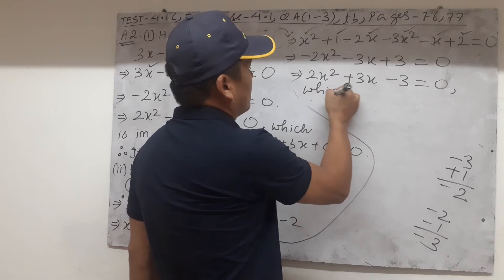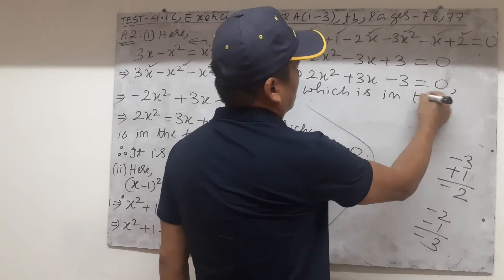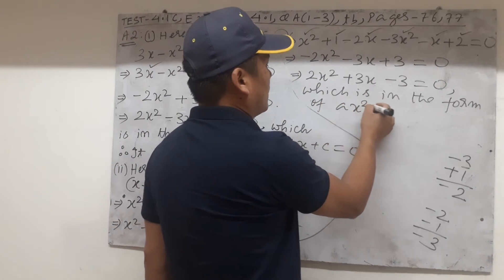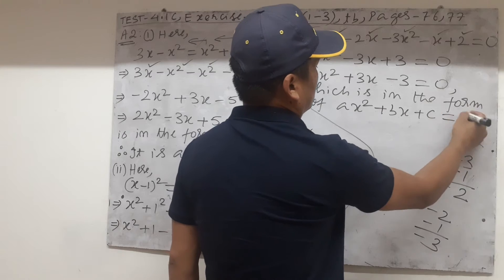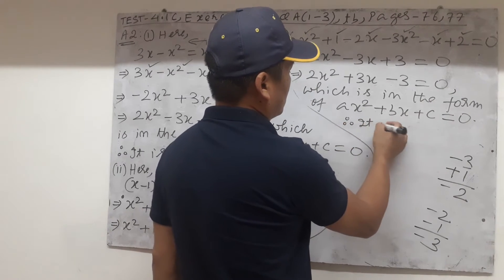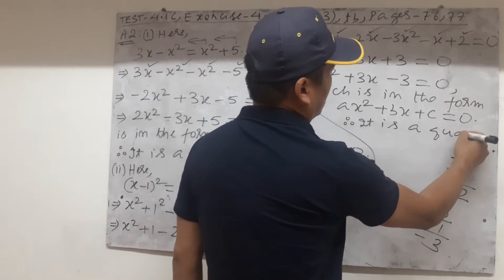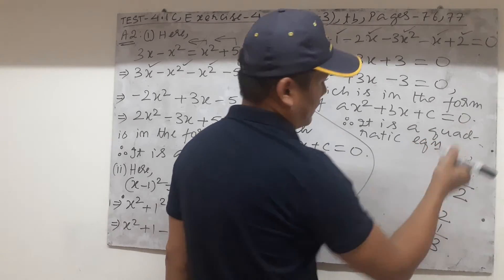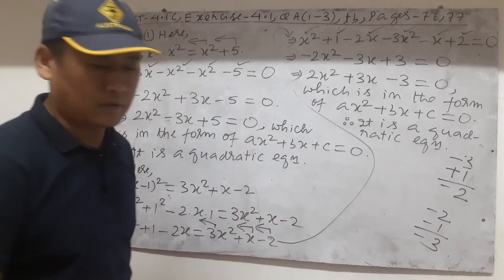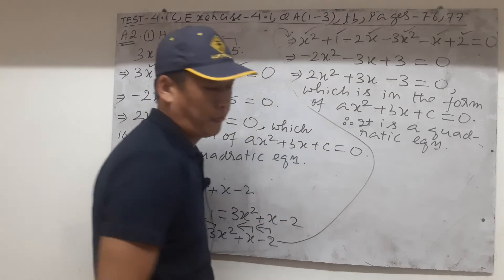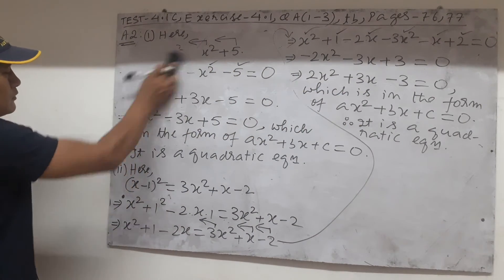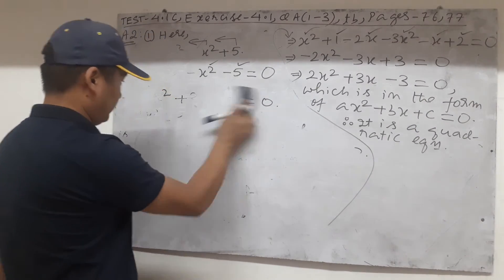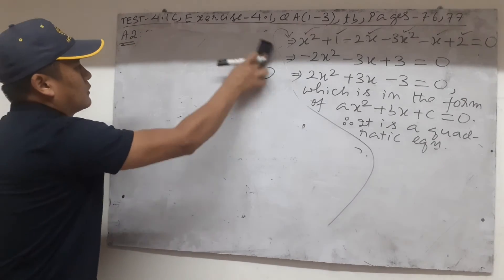This is in the form of ax squared plus bx plus c equal to zero — therefore option 2 is also a quadratic equation. This is not the right choice, because we are looking for the one which is NOT quadratic. So let's continue to option 3 and keep checking until we find the one that is not quadratic.